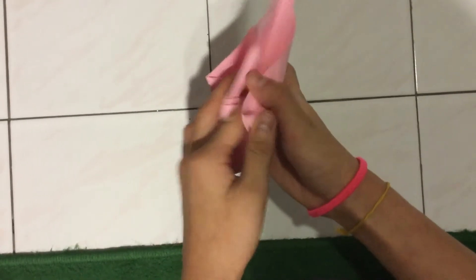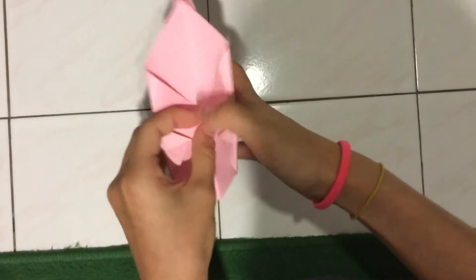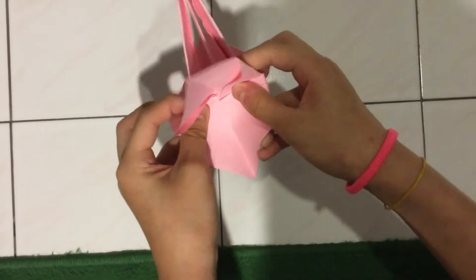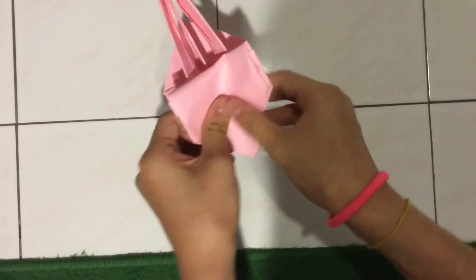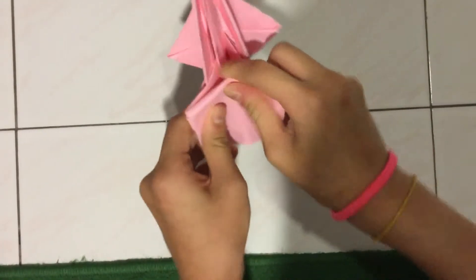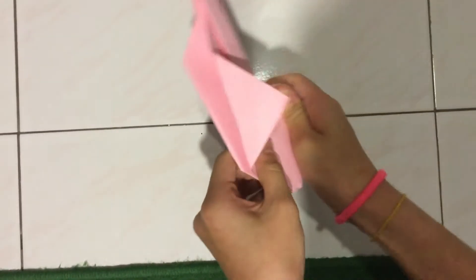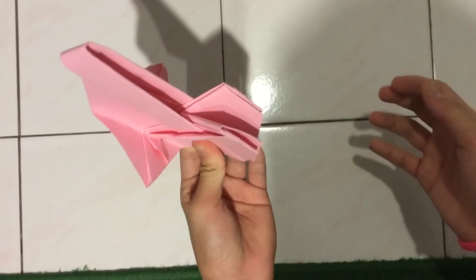So then you want to open it and fold it inside. After you fold it inside, you want to bring the top part down to make it look like this, and you want to fold it together. Then your basket's coming along.